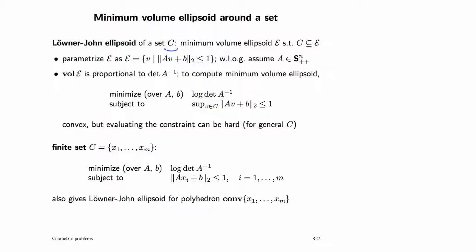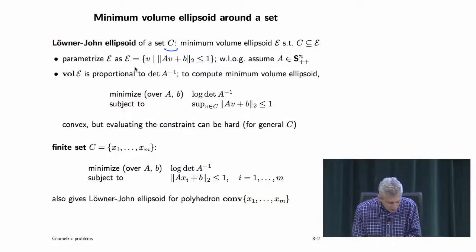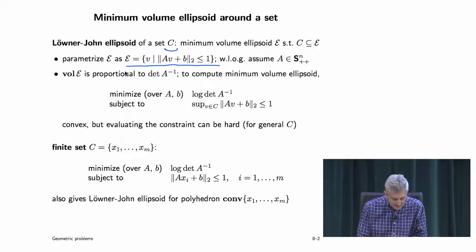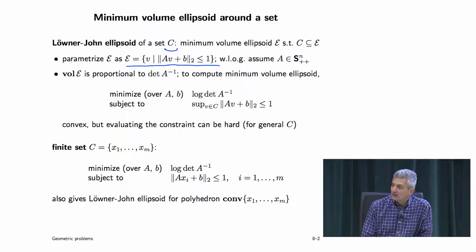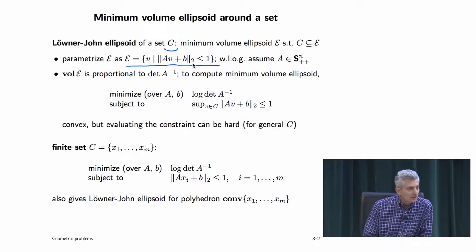We can generically write this as a convex optimization problem for computing the minimum volume ellipsoid. But there's an expression in the constraints that may or may not be tractable, and we're far enough along to admit that there are non-tractable convex optimization problems. We use a carefully chosen parameterization: the ellipsoid E is the inverse image of the unit ball under an affine mapping, i.e., the set of points v where ||Av + b|| ≤ 1.